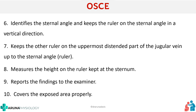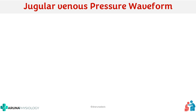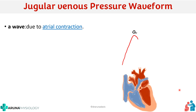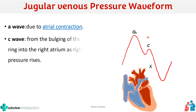An important topic is the jugular venous pressure waveforms. The first wave is the A wave, which is due to atrial contraction. When the right atrium contracts, right atrial pressure increases, producing a positive deflection — that is the A wave. The second positive deflection is the C wave, which occurs due to bulging of the tricuspid valve into the right atrium as right ventricular pressure rises.